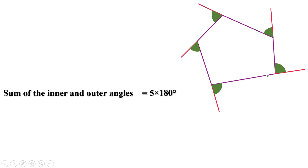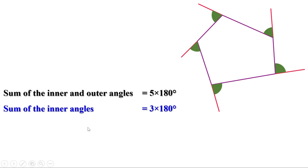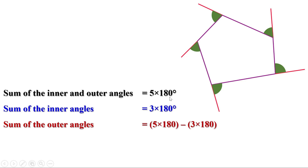For a pentagon, n = 5, so the sum of inner angles is (5 − 2) × 180 = 3 × 180. To get the sum of outer angles, we subtract: 5 × 180 − 3 × 180 = 2 × 180 = 360 degrees. So the sum of the outer angles of a pentagon is also 360 degrees.